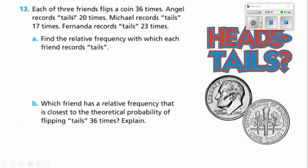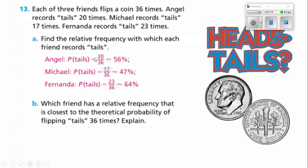Number 13. Each of three friends flips a coin 36 times. Angel records tail 20 times. Michael records tail 17 times. And Fernanda records tails 23 times. Find the relative frequency with which each friend records tails. Angel had the probability of tails 20 times out of 36, that's 56%. Michael's probability for tails was 17 out of 36, and that's 47%. And Fernanda's probability for tails is 23 out of 36, which is 64%. All we have got to do is put the number of times it happened over the number of trials, and then divide the numerator by the denominator to get our percentage.